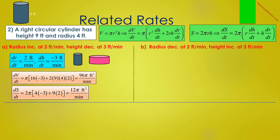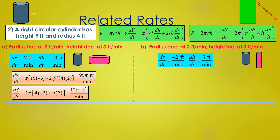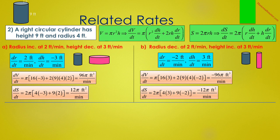Both the volume and the surface area are increasing despite the fact that the height is decreasing. In B, the radius is decreasing at 2 feet per minute and the height is increasing at 3 feet per minute, so dR/dt equals negative 2 and dH/dt equals 3. The cylinder becomes much skinnier. Then dV/dt equals π times the quantity 16 times 3 plus 2 times 9 times 4 times negative 2, which is negative 96π cubic feet per minute. And dS/dt equals 2π times the quantity 4 times 3 plus 9 times negative 2, which is negative 12π square feet per minute. Despite the fact that the height is increasing, both the volume and surface area are getting smaller.